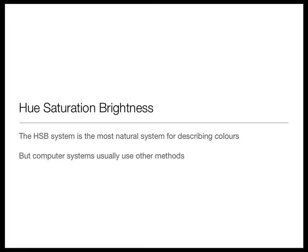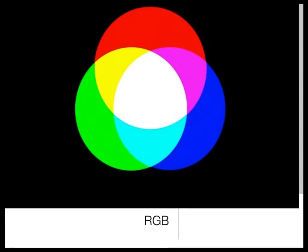But we don't typically use it that often in computer systems. In computer systems we typically opt for the red, green, blue model of color — the RGB system.